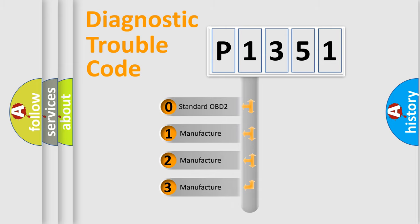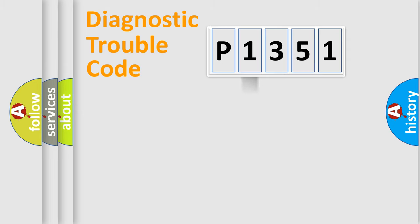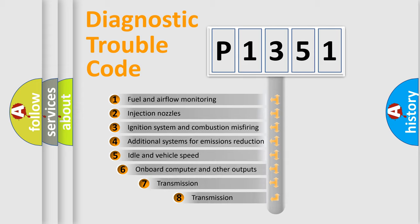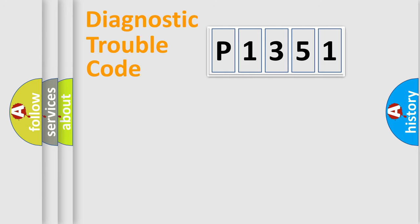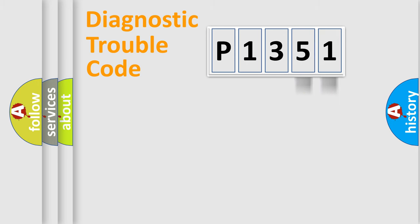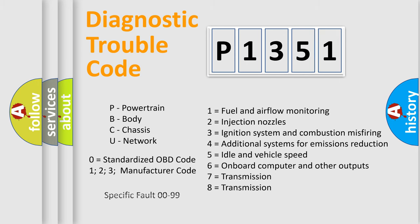If the second character is expressed as zero, it is a standardized error. In the case of numbers 1, 2, or 3, it is a more specific expression of a car-specific error. The third character specifies a subset of errors. This distribution is valid only for the standardized DTC code. Only the last two characters define the specific fault of the group, and this division is valid only if the second character code is expressed by the number zero.